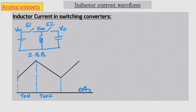We can do a similar analysis for the IBB converter. Here, one end of the inductor is permanently connected to ground, which means neither the input nor the output current is smooth. So the IBB has a hot loop on both the input side and the output side. I'll leave the input and output current derivation as an exercise.